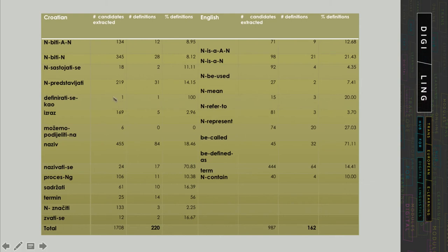This is a table demonstrating the productivity of such patterns for Croatian and for English. So here if you look at the percentage of true definitions extracted by each pattern, some tend to be more productive than others.